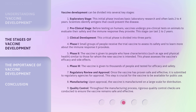Stage 3: Clinical development. This critical phase is divided into three parts. Phase 1: Small groups of people receive the trial vaccine to assess its safety and to learn more about the immune response it provokes. Phase 2: The vaccine is given to people who have characteristics, such as age and physical health, similar to those for whom the new vaccine is intended. This phase assesses the vaccine's efficacy and side effects. Phase 3: The vaccine is given to thousands of people and tested for efficacy and safety. Stage 7: Regulatory review and approval. Once the vaccine has proven safe and effective, it is submitted to regulatory agencies for approval. This step is crucial for the vaccine to be available for public use.